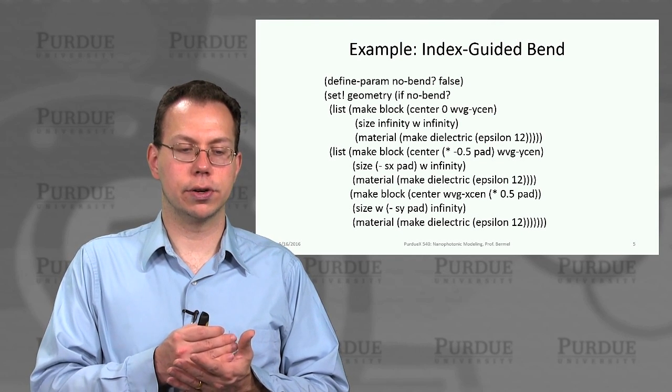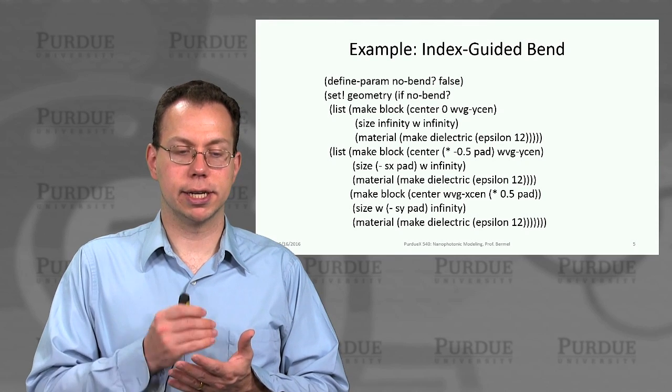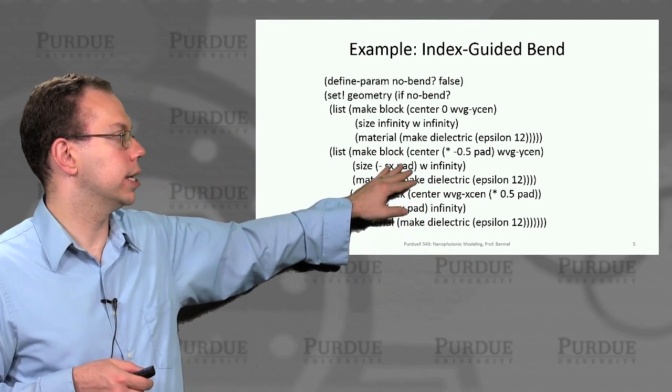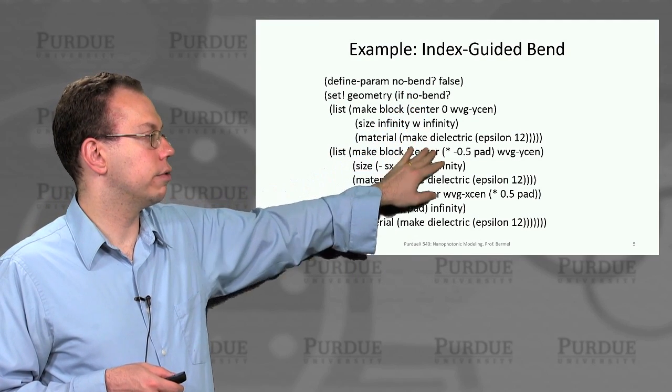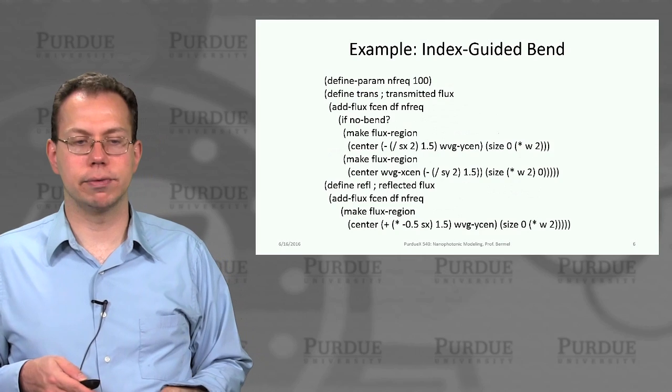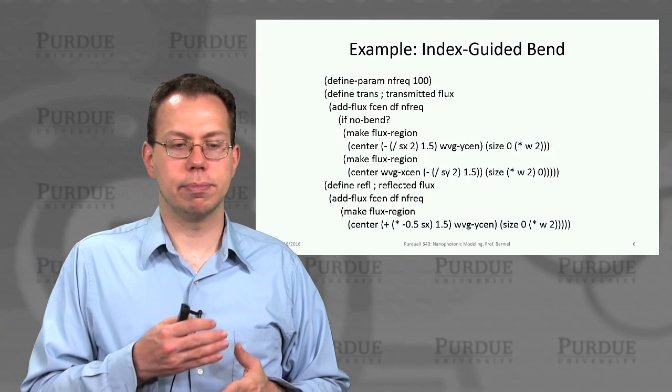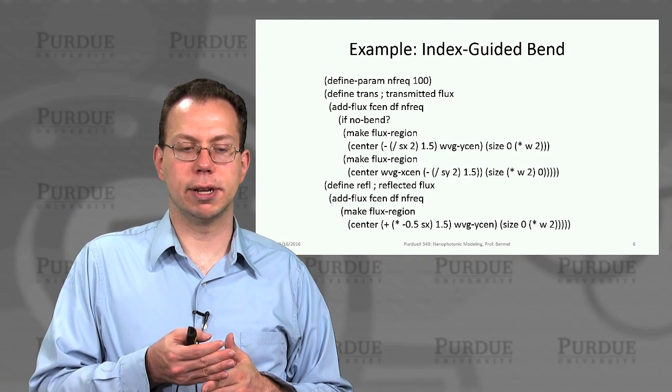And then we also create a flux in the presence of the bend as well. So this is basically allowing us to have a switch that has two different geometries based on whether or not we have that bend. And then in both cases we can compute a transmitted flux.